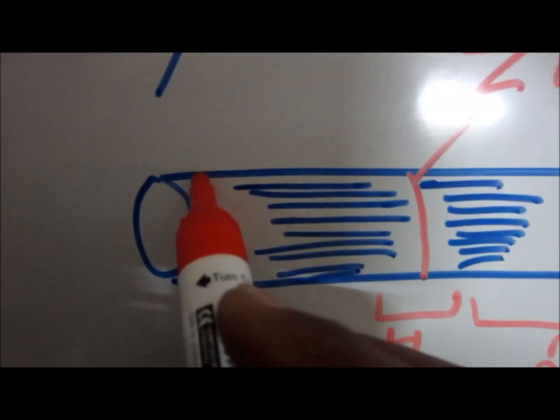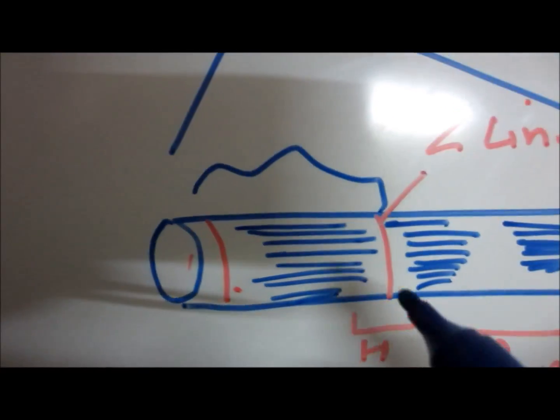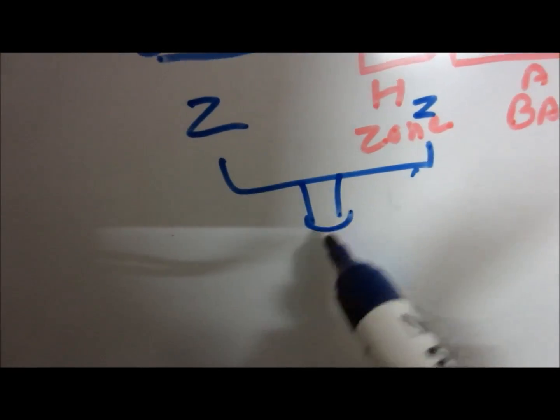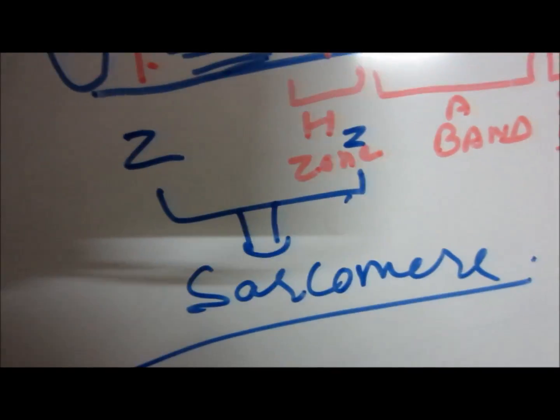The area between two Z lines is known as sarcomere, which is the contractile unit of a skeletal muscle.